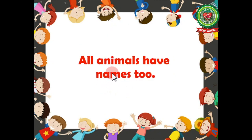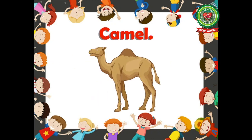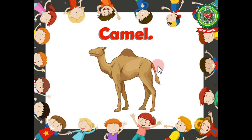Similarly, all the animals have their names too. Yes, it is a picture of a camel. We can recognize the name by saying it — camel — c-a-m-e-l, camel — name of an animal, so noun.